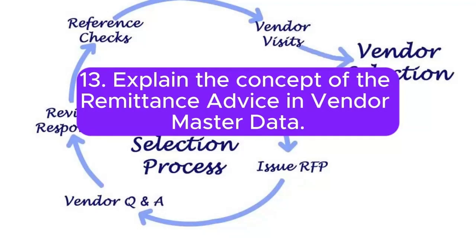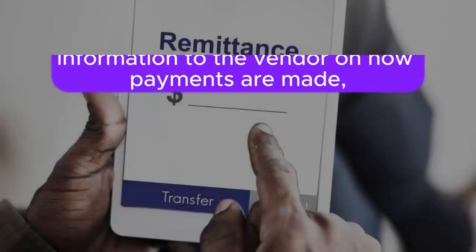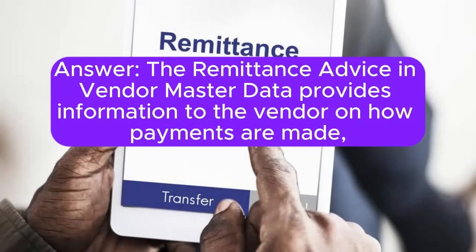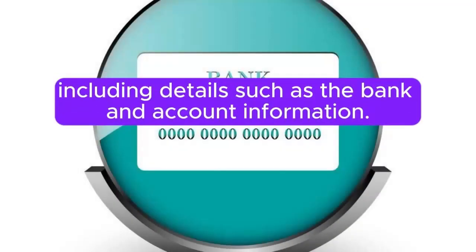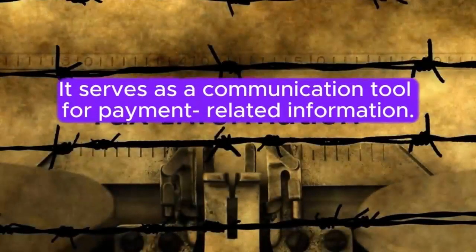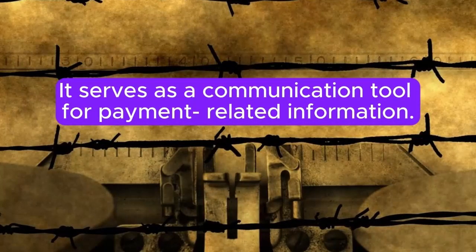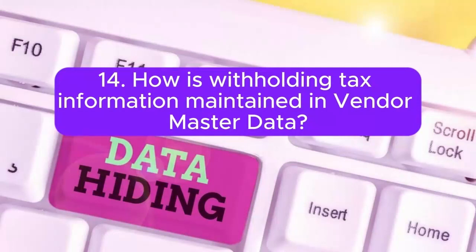13. Explain the concept of the remittance advice in Vendor Master Data. Answer: The remittance advice in Vendor Master Data provides information to the vendor on how payments are made, including details such as the bank and account information. It serves as a communication tool for payment-related information.